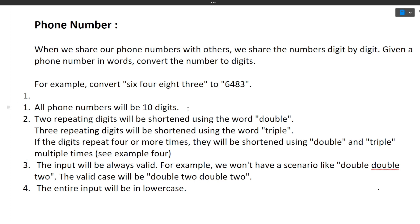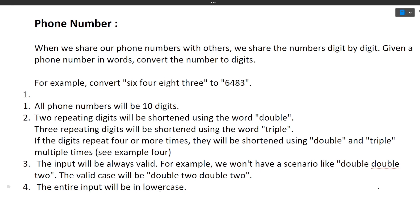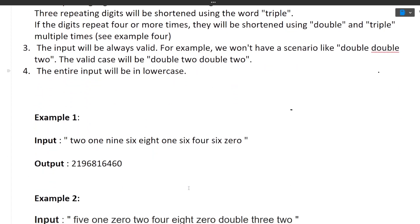All phone numbers will be of 10 digits. Two repeating digits will be shortened using the word 'double' — for example, 'four double two eight' means 4228. Three repeating digits are shortened using 'triple' — 'four triple two eight' means 42228. If digits repeat four or more times, double and triple are used multiple times. The input will always be valid — so a scenario like 'double double two' is not valid, but 'double two double two' is. The entire input will be lowercase.